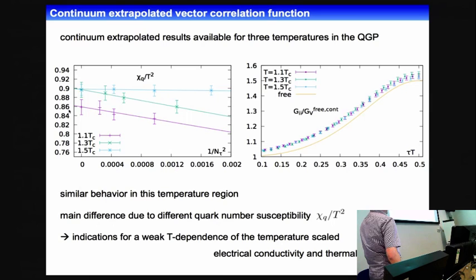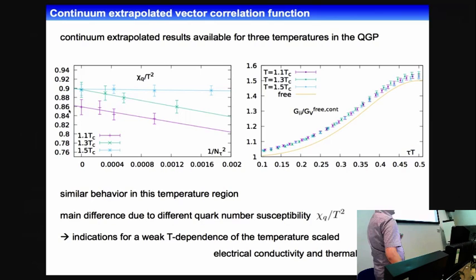The non-perturbative information we want to extract is just the difference between the free and the lattice continuum extrapolated correlators. This difference is relatively small, showing already how hard it is to extract the spectral information.